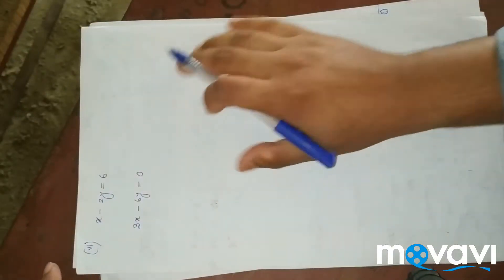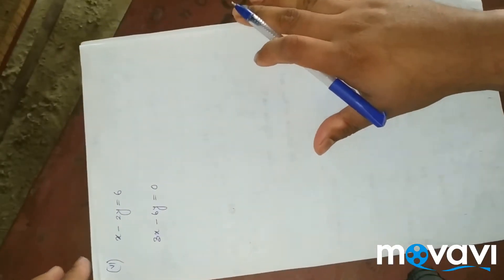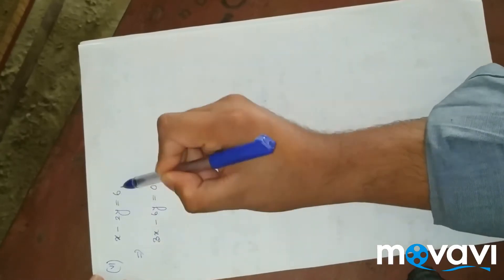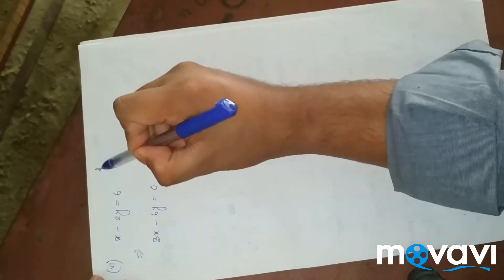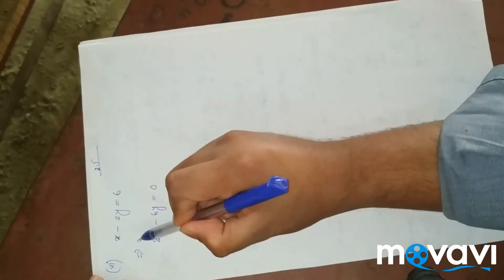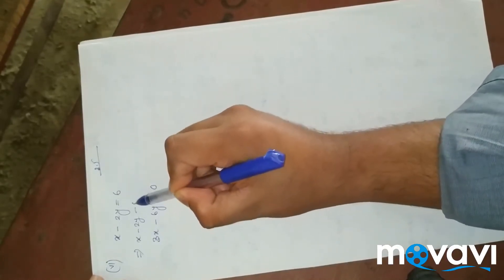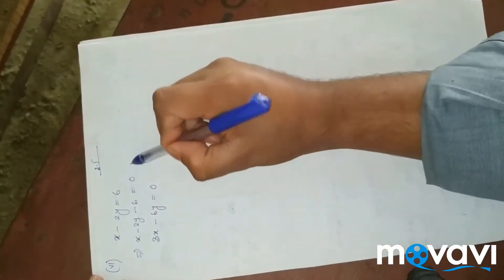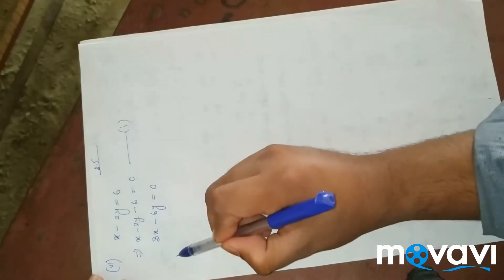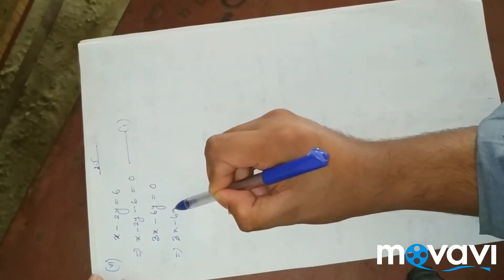Hello everyone. We are going to show you the number 3.5. We have standard format: 2y, 6y, and this is 0. We are going to show you the number of 3x minus 6y.